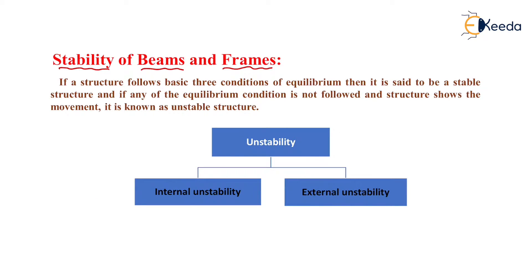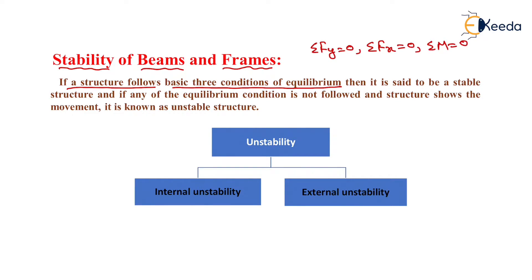What do you mean by stability? If a structure follows the basic three conditions of equilibrium — net vertical forces equal to zero, net horizontal forces equal to zero, and net moment acting on the body equal to zero — then the structure is said to be a stable structure. If any of the equilibrium conditions is not followed and the structure shows movement, then it is known as an unstable structure.